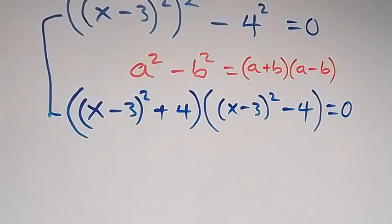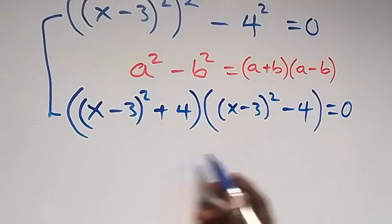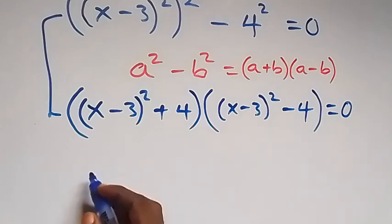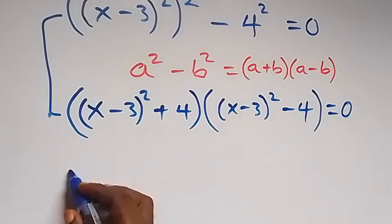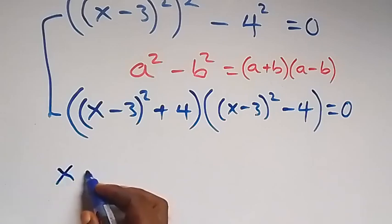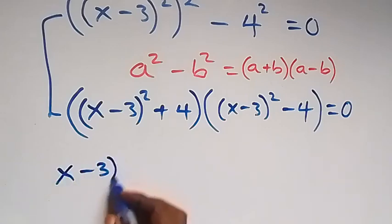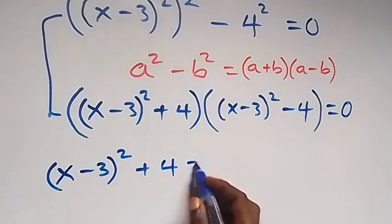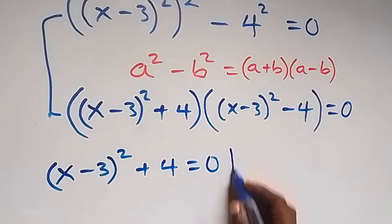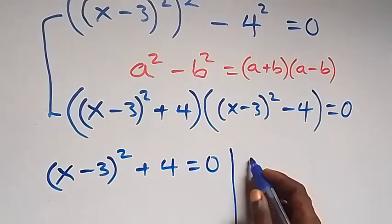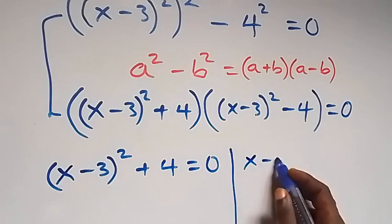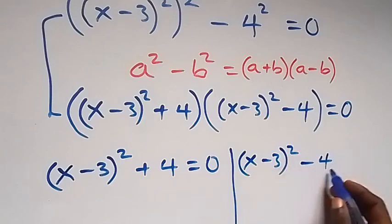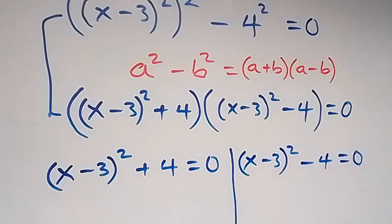Then from what we have, when we multiply two numbers and get 0, it's possible the first equals 0 or the second equals 0. So here we have the first case: x minus 3 squared plus 4 equals to 0, and on this side we have x minus 3 squared minus 4 equals to 0.